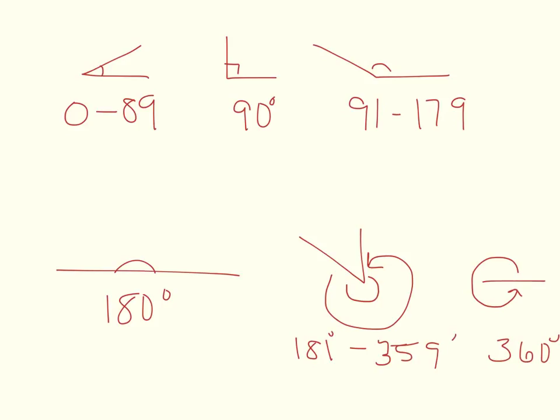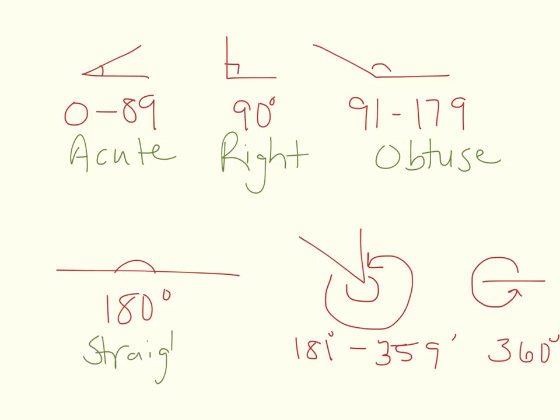So let's go through it again one more time. This right here is acute. This is a right. We have an obtuse. Straight. We have a reflex. And then, I call this a full. That might not be the technical name, but it's 360 degrees around.